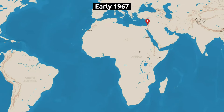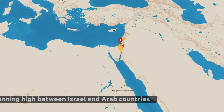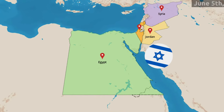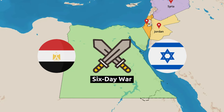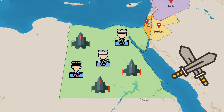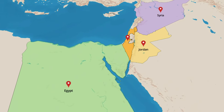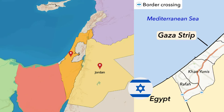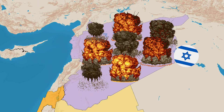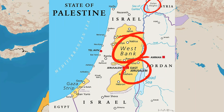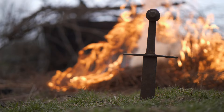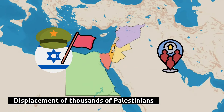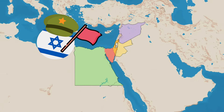In early 1967, tensions were running high between Israel and its Arab neighbors, including Egypt, Jordan, and Syria. On June 5, 1967, Israel launched a surprise attack on Egypt, igniting the Six-Day War. The assault destroyed much of Egypt's air force on the ground, followed by a ground offensive in the Sinai Peninsula, leading to Israel capturing the Gaza Strip and the Sinai. Israel then launched attacks on Jordan and Syria, capturing the West Bank, East Jerusalem, and the Golan Heights. The war had significant geopolitical consequences, with Israel emerging as a dominant military power in the region, and led to the displacement of thousands of Palestinians.